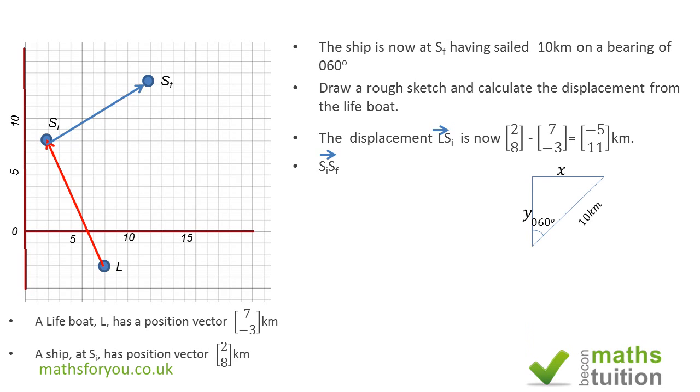We need to calculate x and y. x is going to be 10 sine 60 degrees which is 8.66, and y is 10 cos 60 degrees which is 5 kilometers. So now the vector S_i S_f is 8.66, 5. Now we need to find L S_f, and to do that we need to add the displacement vectors.